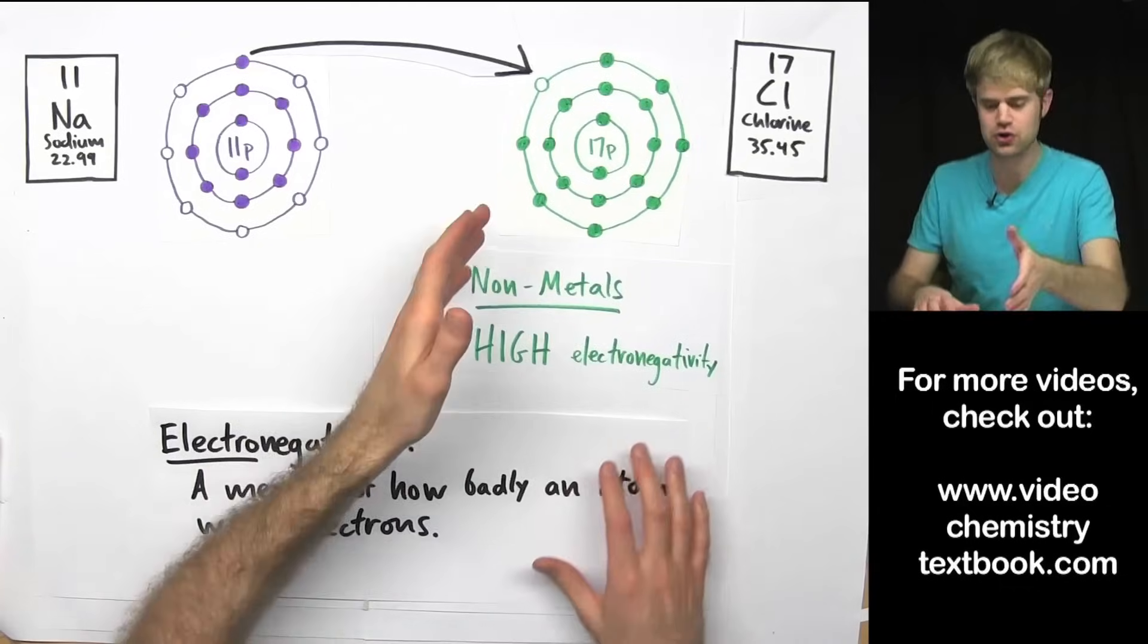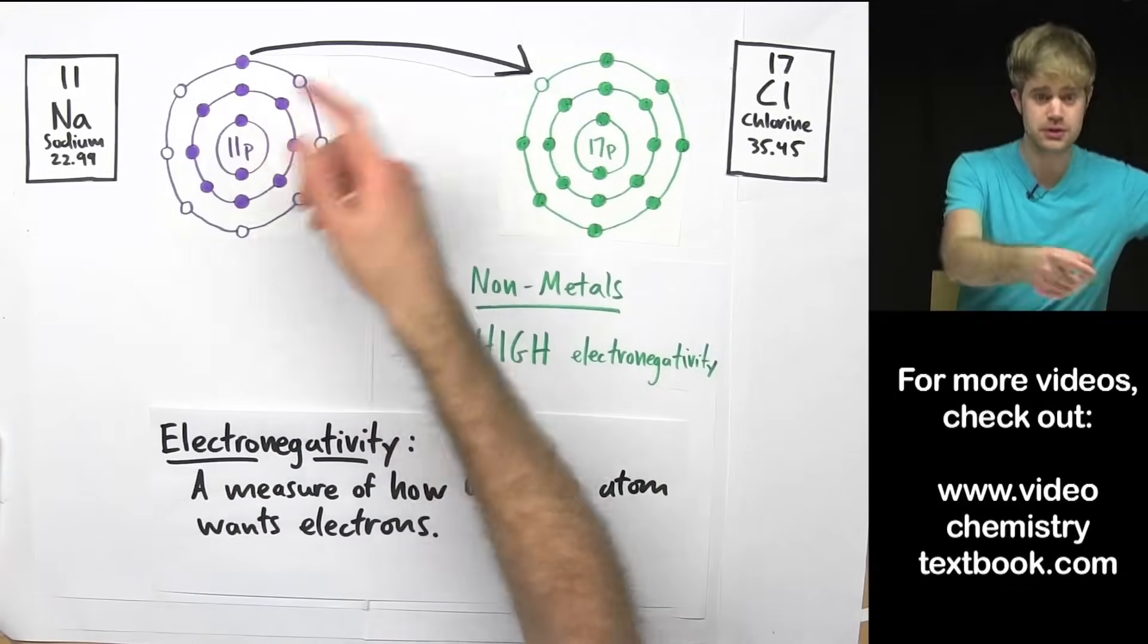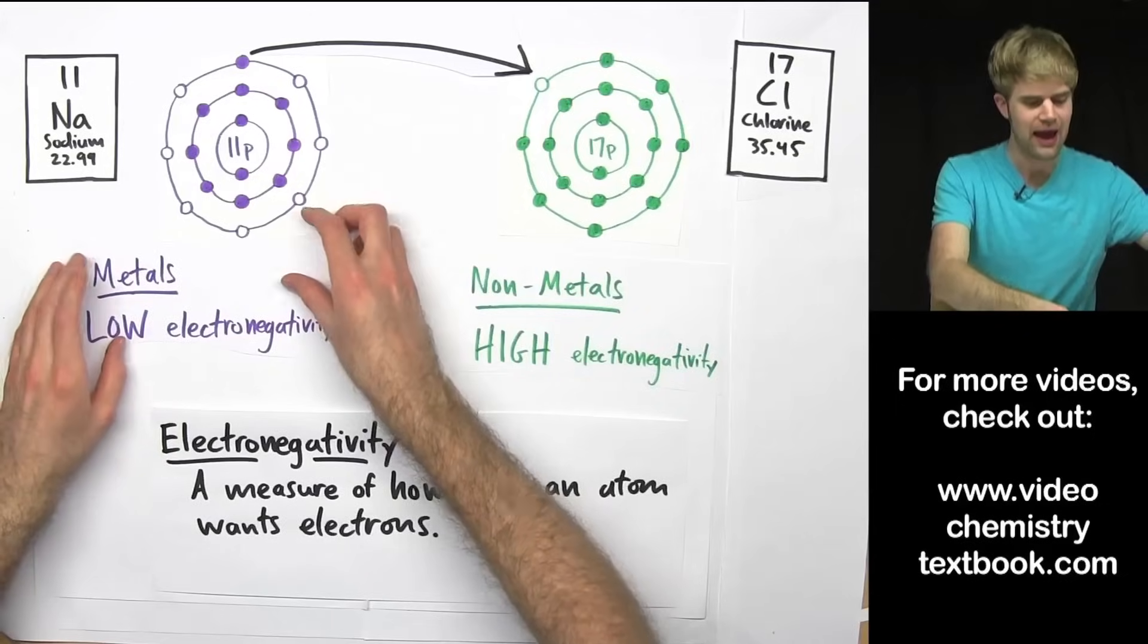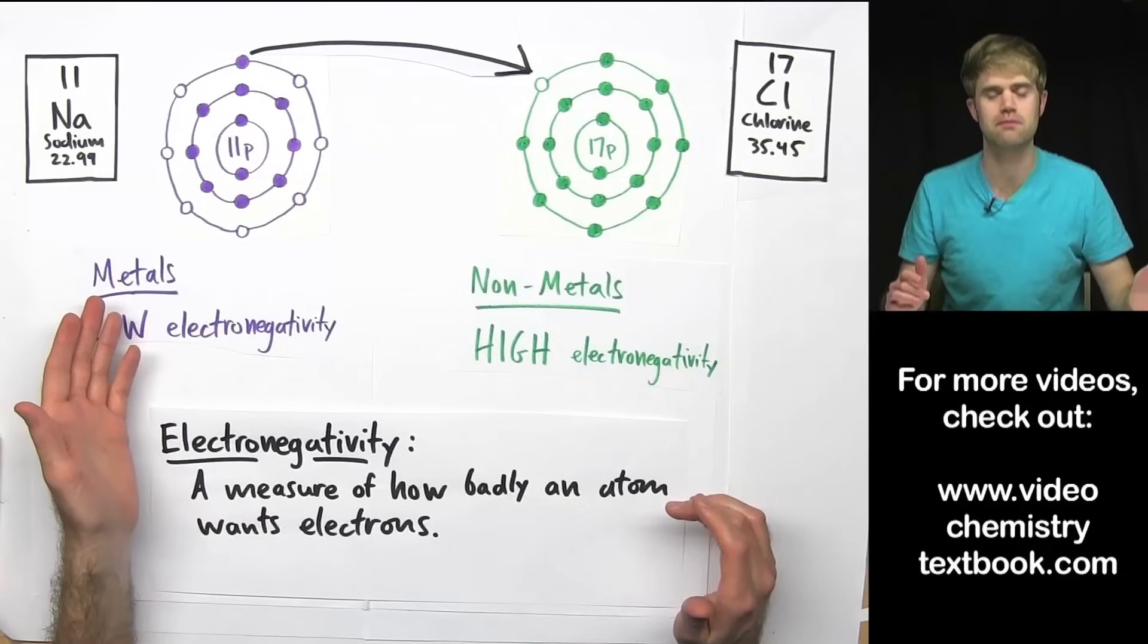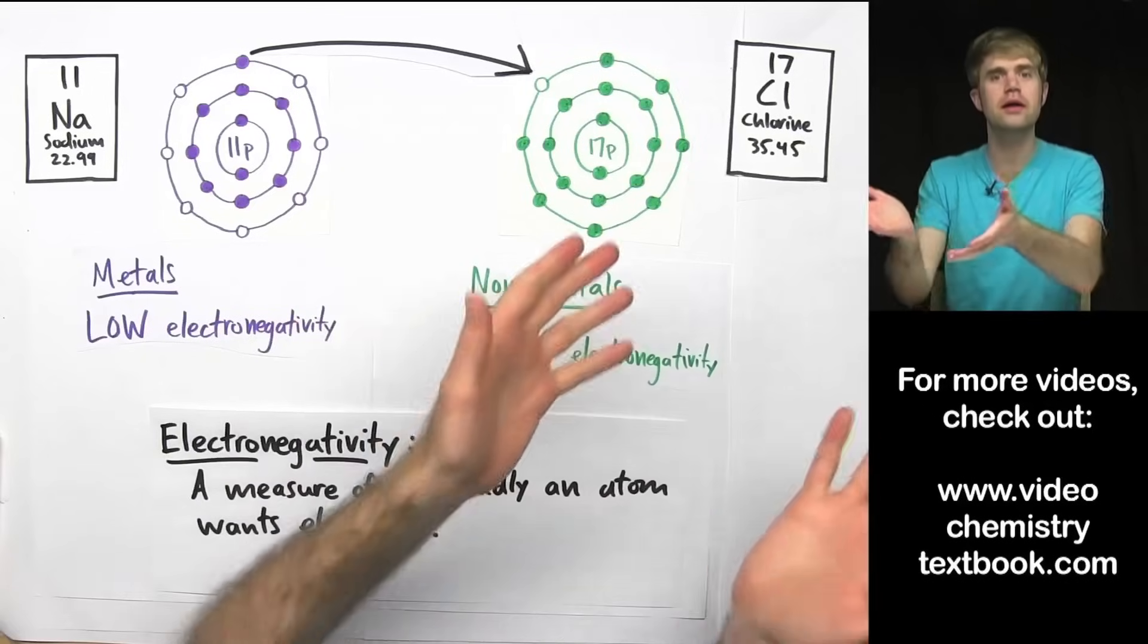On the other hand, metals like sodium have a low electronegativity. They are not so greedy for electrons and they are willing to give them up.